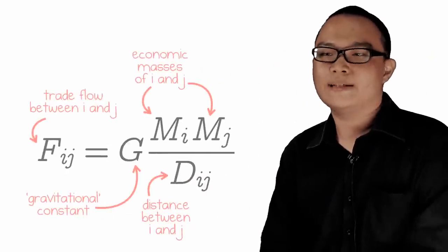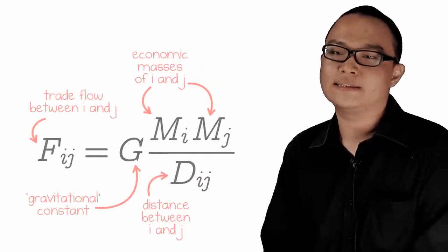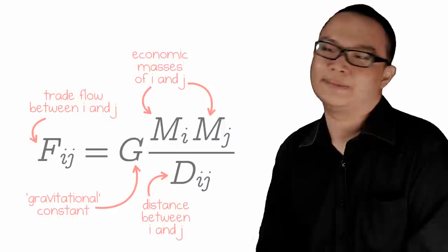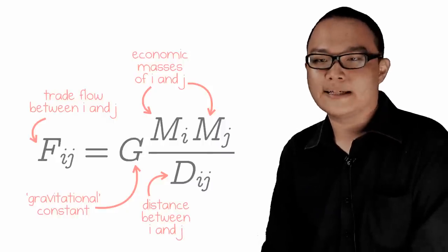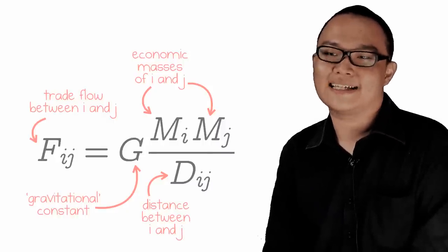Paul Krugman also came up with the Gravity Model of International Trade, with factors in transport costs and relative GDP. This is the formula where F is the volume of trade between countries I and J.